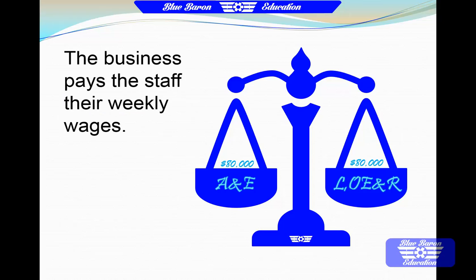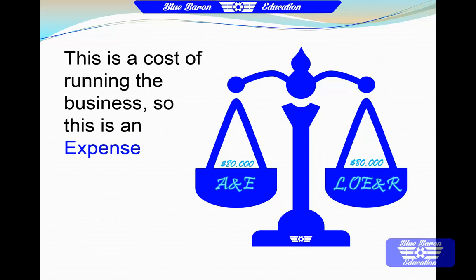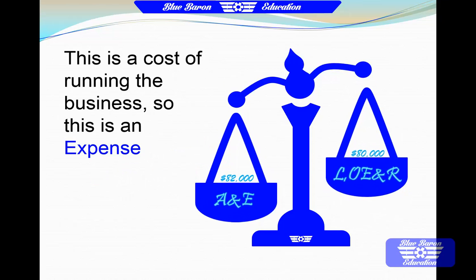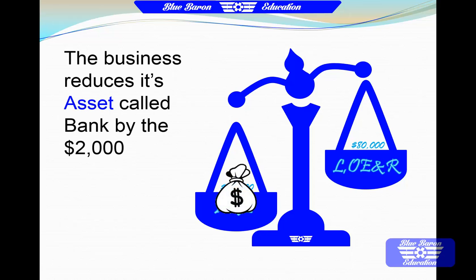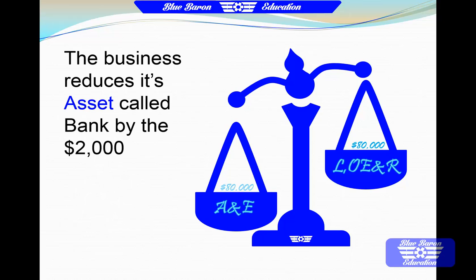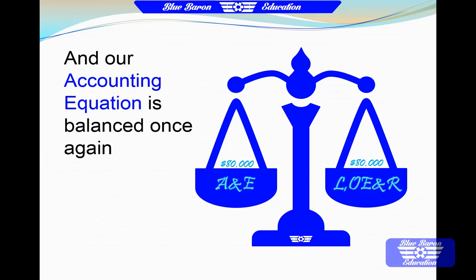The business pays the staff their weekly wages. This is a cost of running the business, so it's an expense. But also we're going to pay money from our bank account, so we're going to reduce that asset. And again our accounting equation is balancing.